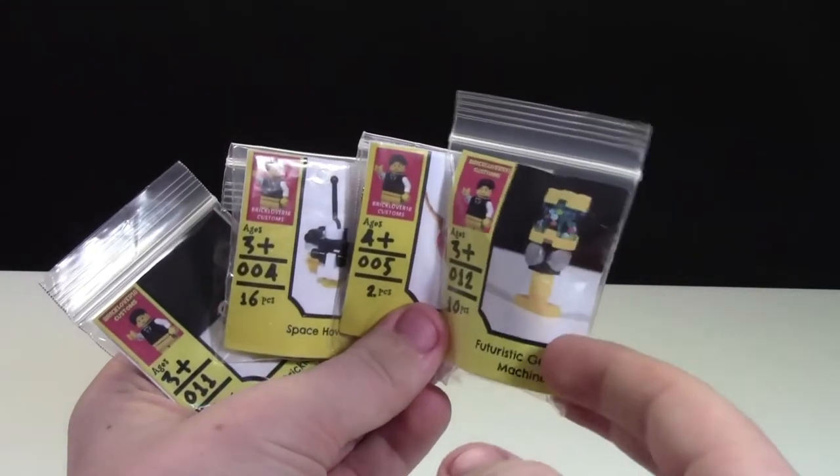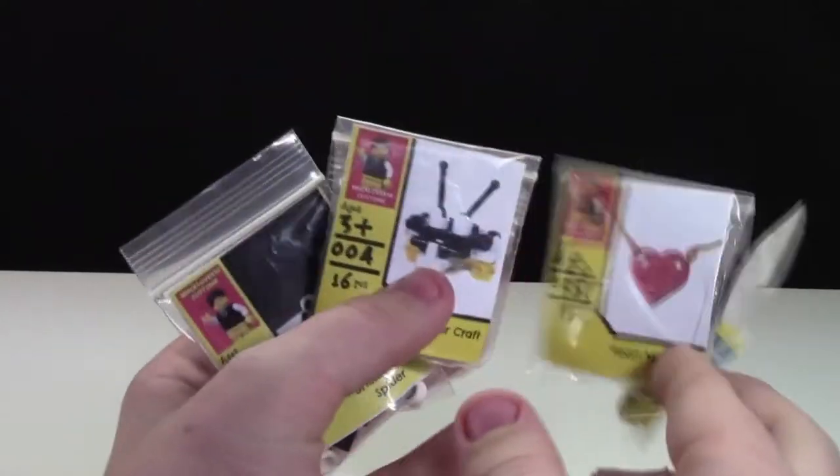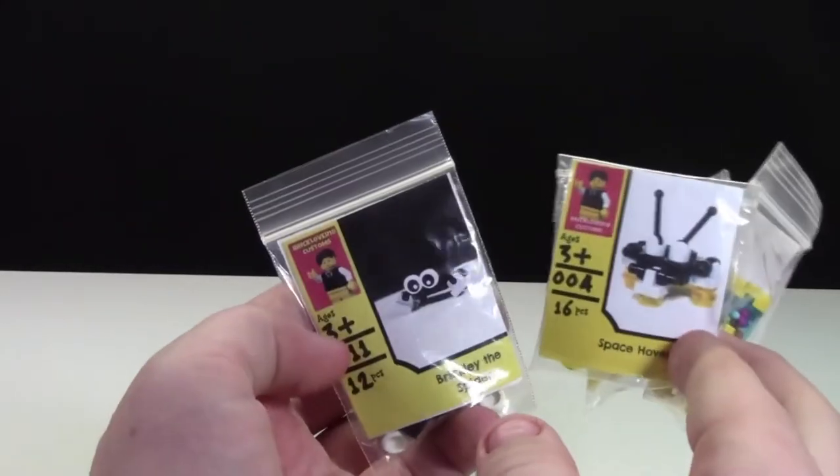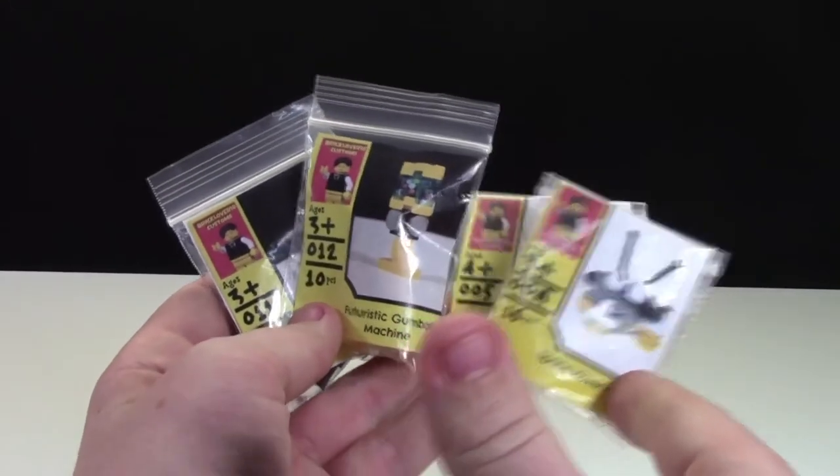Next up, some of my own BrickLover 18 customs. As you can see, I make things like gumball machines, necklaces, space hovercrafts, as well as little spiders, just a variety of very affordable custom LEGO kits.